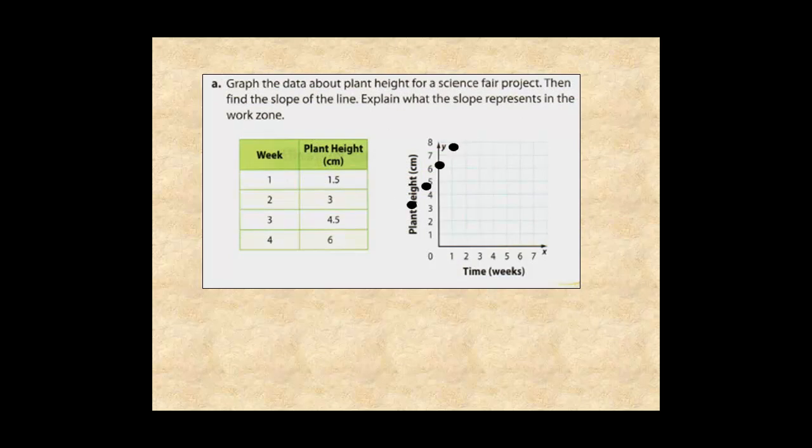Graph the points and draw a line. To find the slope of the line, you can use any two points. For this problem, point 1 is 2,3, and point 2 is 4,6.